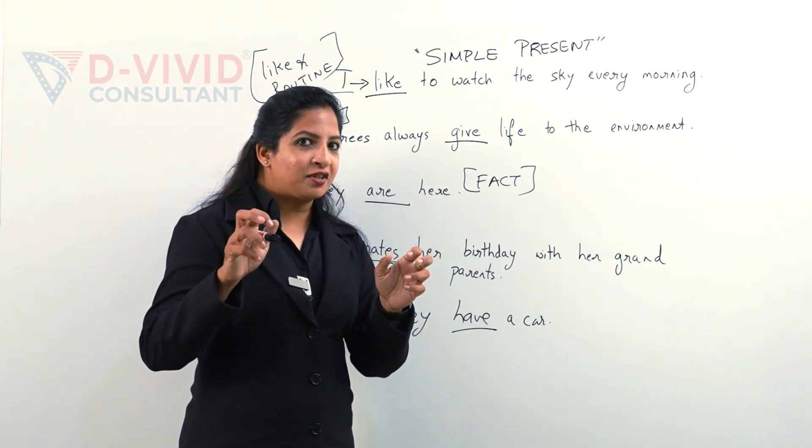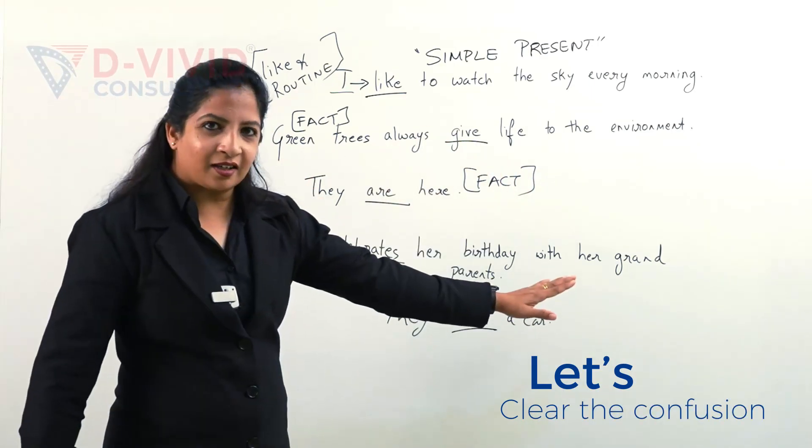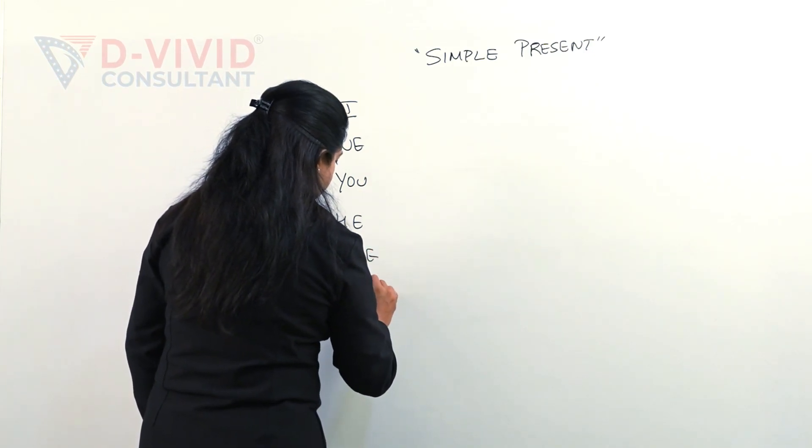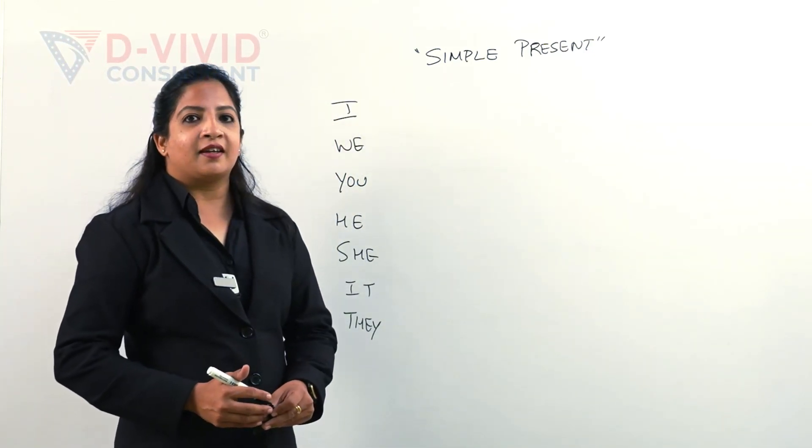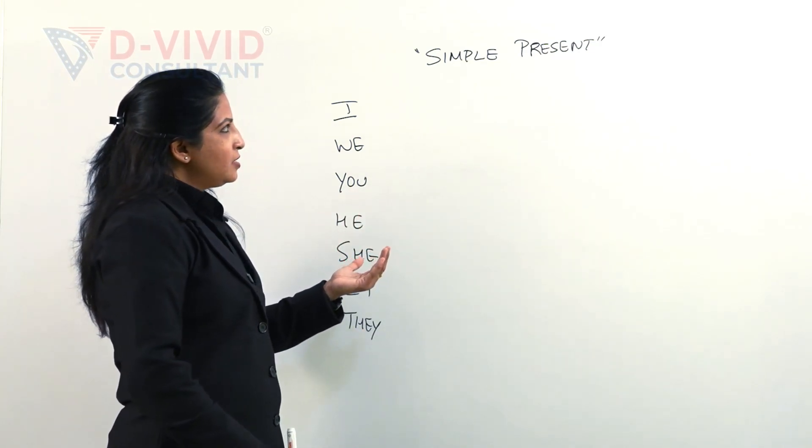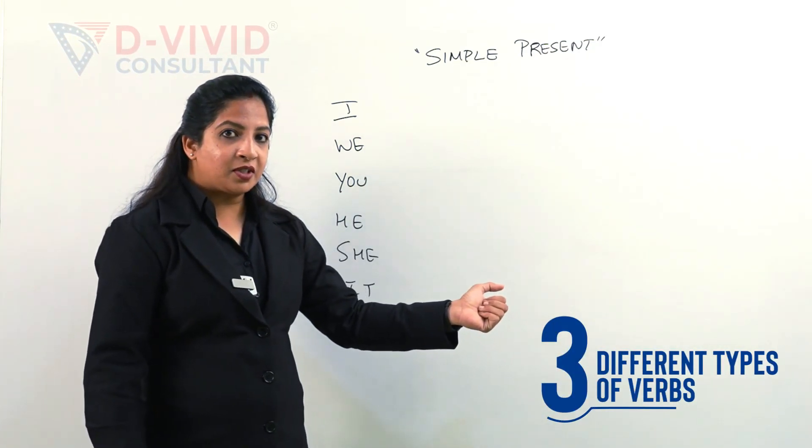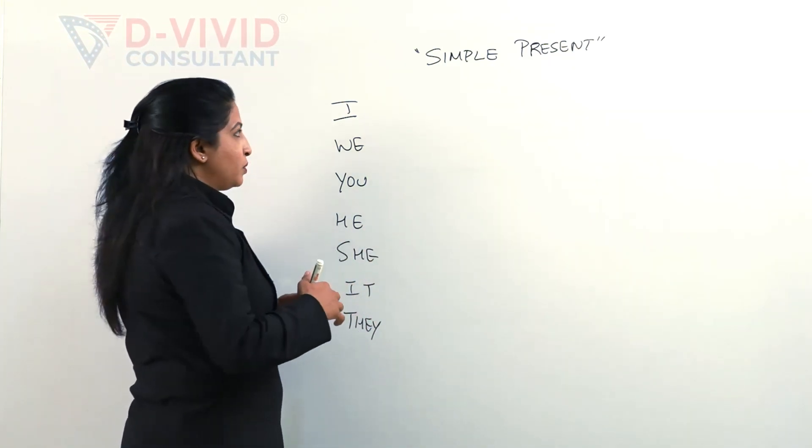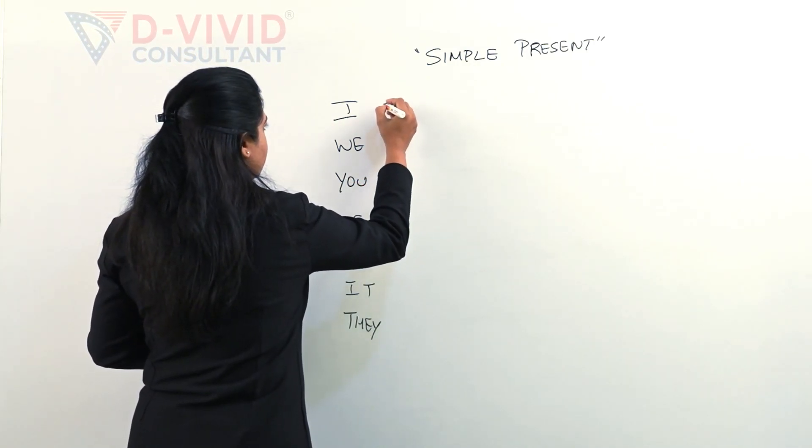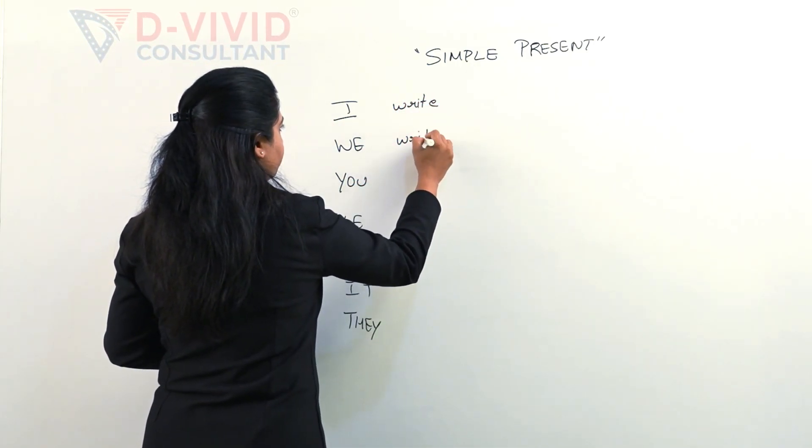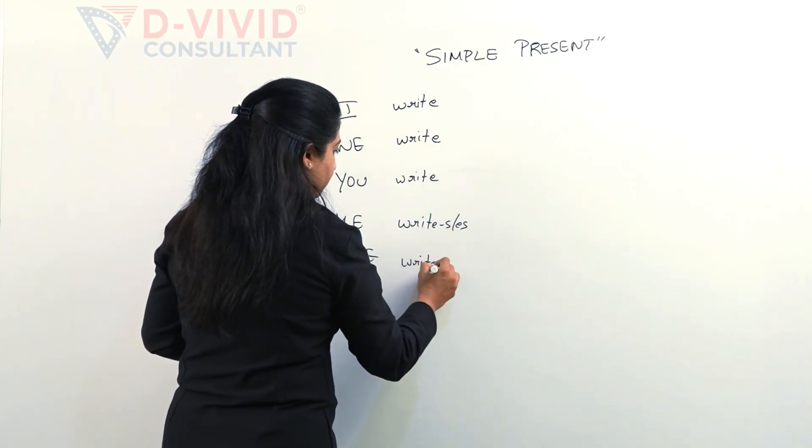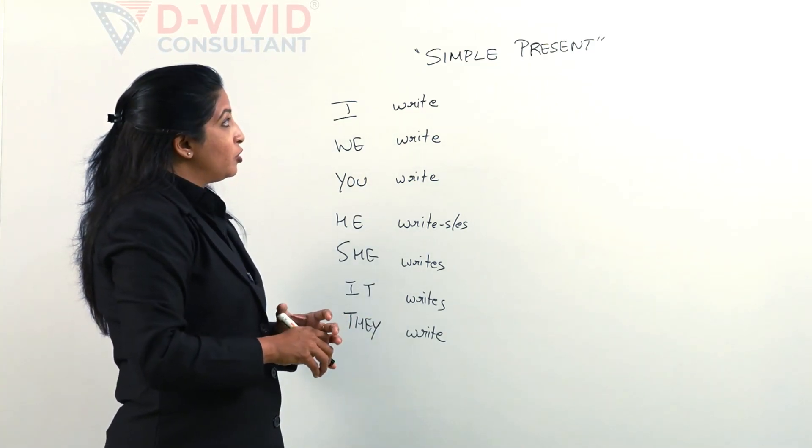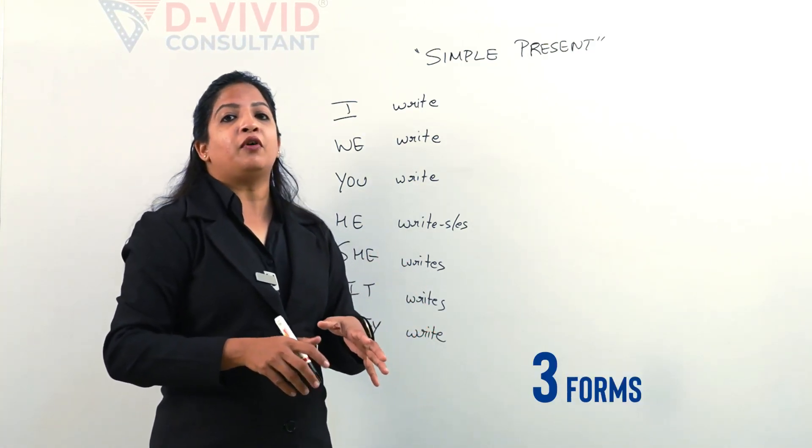So a confusion. Let me help you clear the confusion. I will write three different types of verbs and show you how they are used.